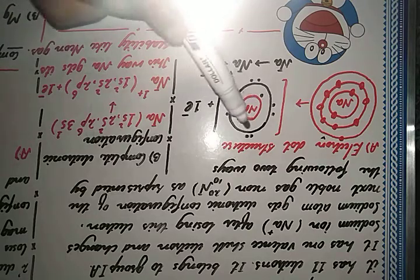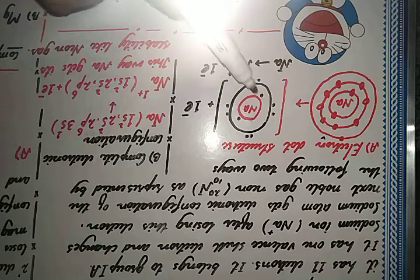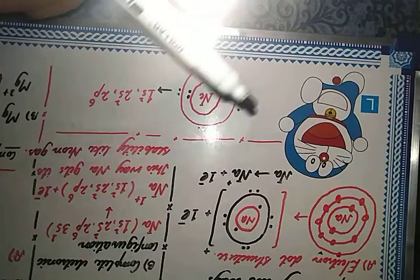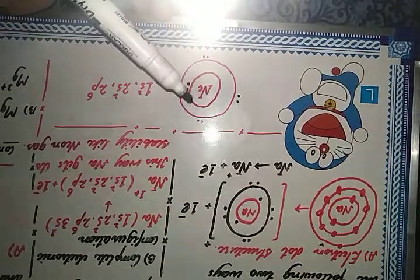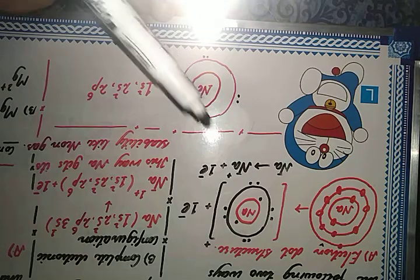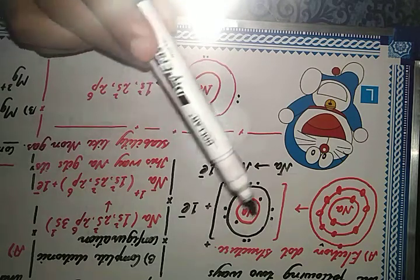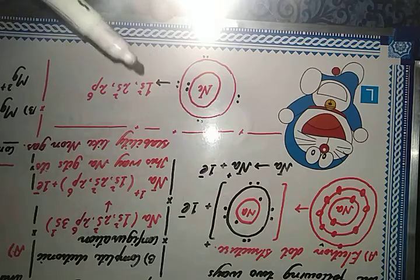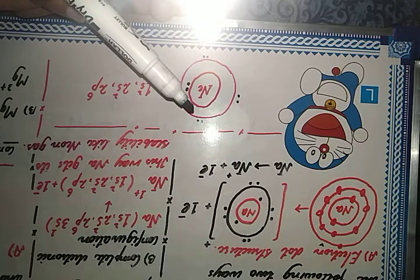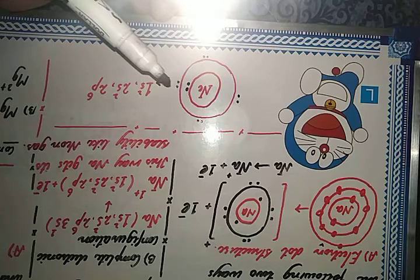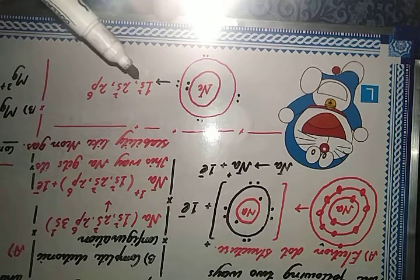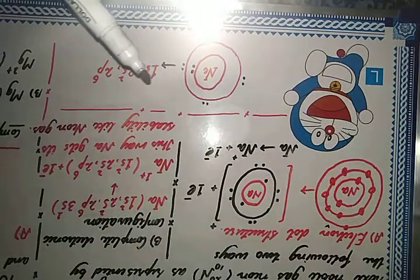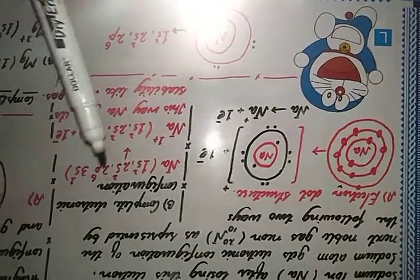Combining those two plus eight electrons, sodium now has the electronic configuration of neon gas. Sodium has two electrons in the first shell and neon also has two; in the second shell sodium now has eight electrons and neon also has eight. This confirms they share the same electronic configuration.